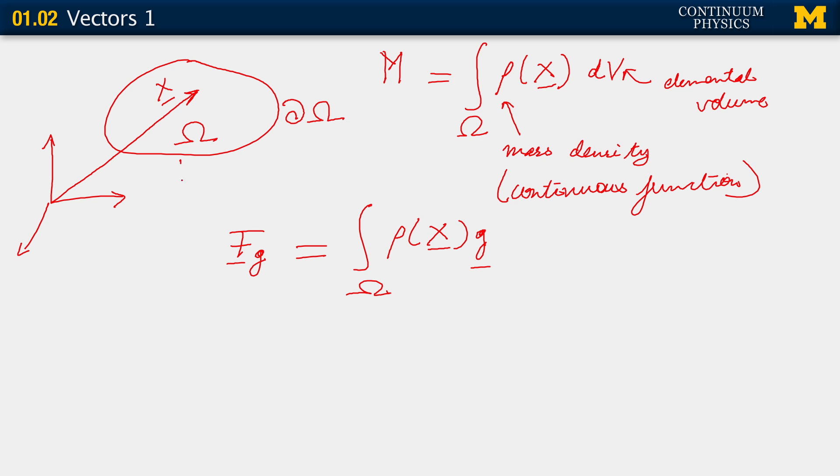Of course, in this case, g is a vector acting downward. G is a vector acting downward, and so is fg, right. To complete this representation, we have to integrate it over the volume once again. So there we are. Again, we've represented the force due to gravity not as a sum over the discrete forces due to gravity on each atom, but as an integral of a continuous function. And the continuous function we introduced in both cases was this density.